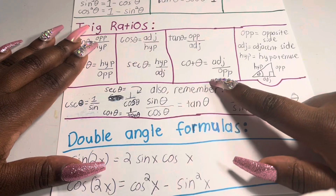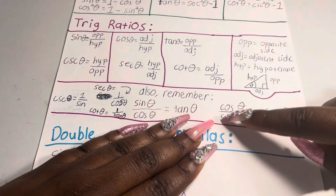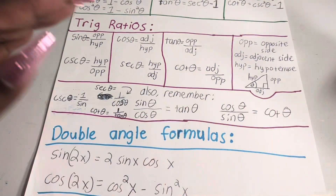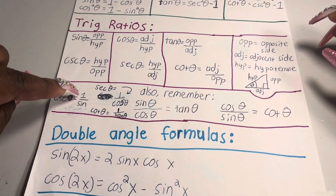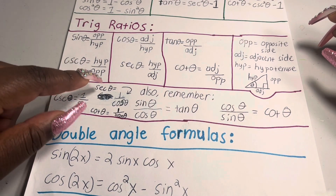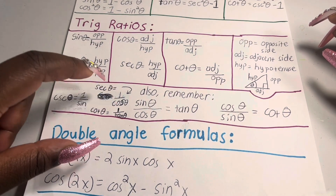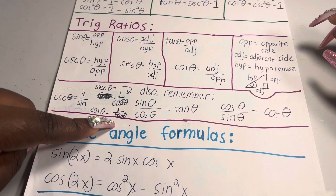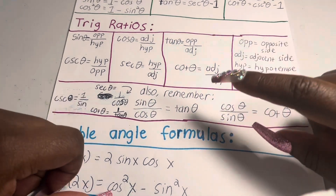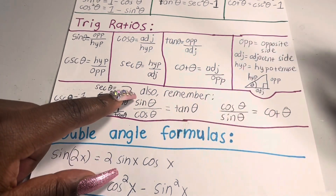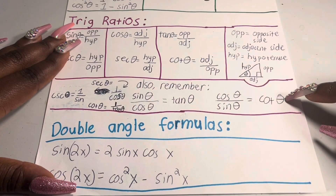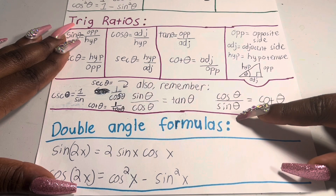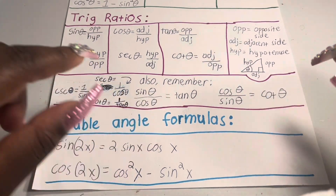It's important to remember: cosecant is the reciprocal of sine, secant is the reciprocal of cosine, and cotangent is the reciprocal of tangent. Also remember that tan θ = sin θ/cos θ, and cot θ = cos θ/sin θ since these two are reciprocals.